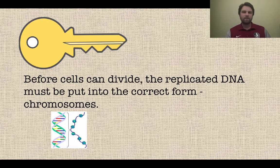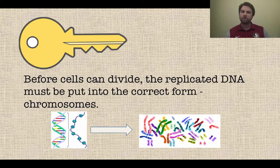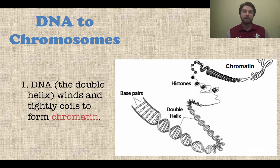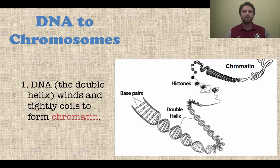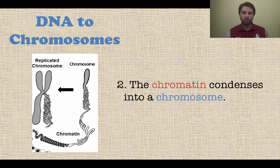Another key concept: before cells can divide, the replicated DNA must be put into the correct form, and that correct form is called chromosomes. So we've got to get from DNA on the left all the way to chromosomes on the right. The DNA, which is a double helix, is wound very tightly, but we're going to wind it even tighter and form something called chromatin. You can see the base pairing of the double helix and then it gets wound tighter and tighter until it becomes chromatin. That chromatin then condenses even further, more and more, to become a chromosome.